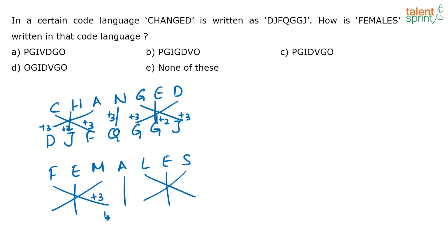Similarly, how will you code the word female? F-E-M-A-L-E-S. Females is coded as? Again, do a crisscross here. So, F plus 3. That's going to be I. G, H and I. Then M, N, O and P. Here it is plus 2.